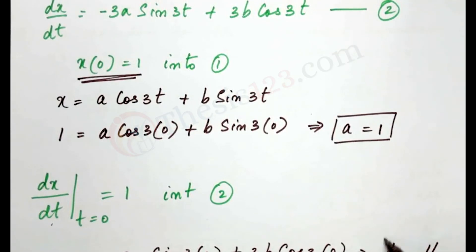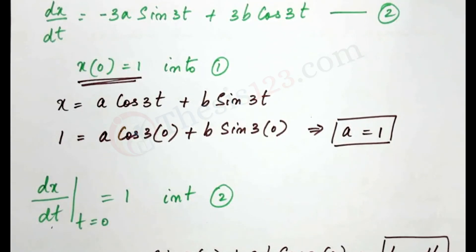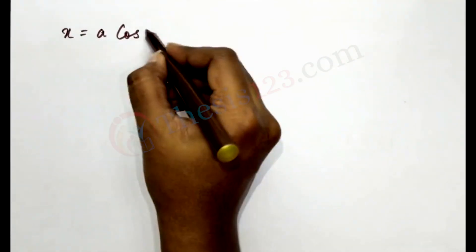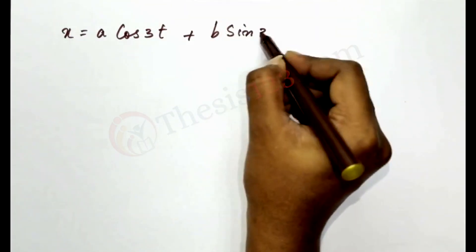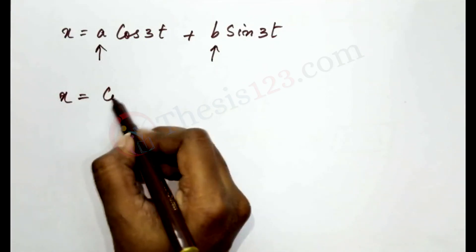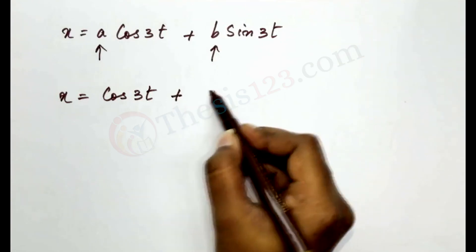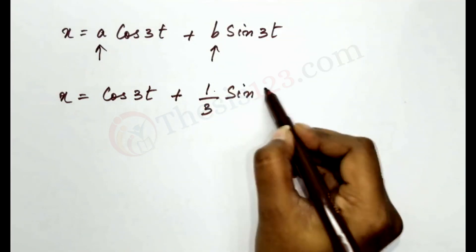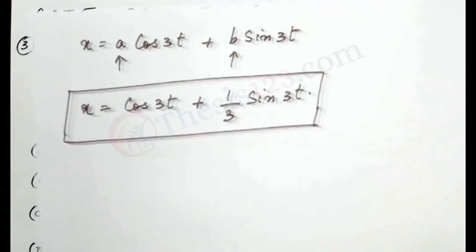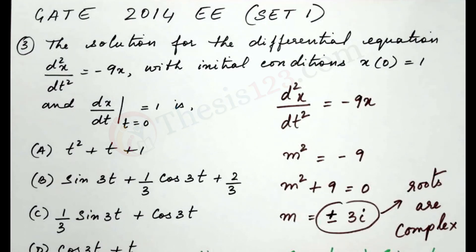Now we have the values a = 1 and b = 1/3. Substituting these into the general solution x = a·cos(3t) + b·sin(3t), we get x = cos(3t) + (1/3)·sin(3t). This is the final solution, and checking the options, it matches option C.